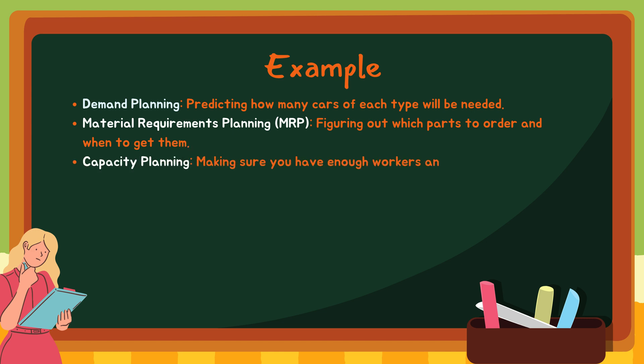Third, capacity planning. You ensure that your factories have enough workers, machines and space to produce the required number of cars.